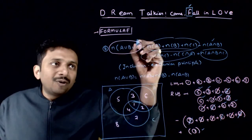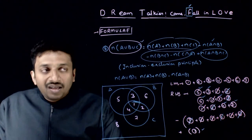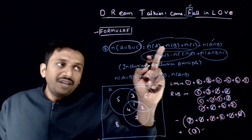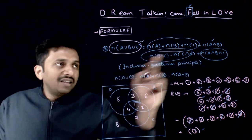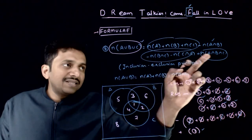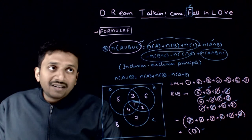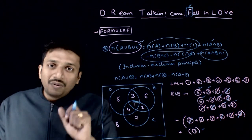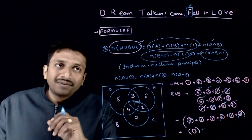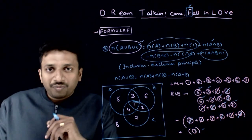From now on, remember this formula carefully: N of A union B union C equals N of A plus N of B plus N of C minus the intersections of two sets plus the intersection of all three sets. That concludes the theory part of the formula section. Now let us see how questions are asked from these topics.